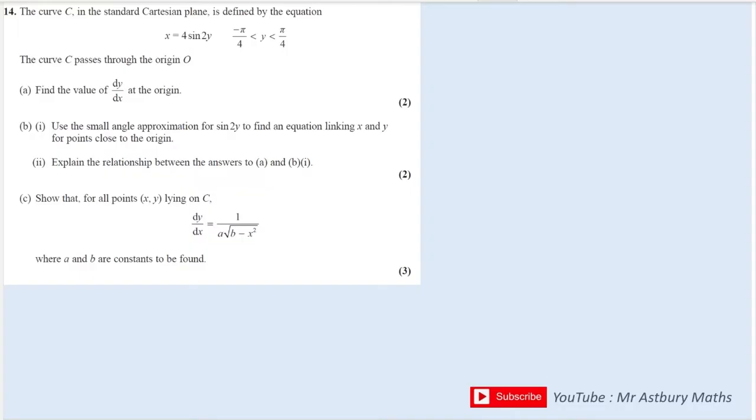Okay, so we have a curve and it's x equals 4 sine 2y between minus pi over 4 and pi over 4. It passes through the origin. Find the value of dy by dx at the origin.